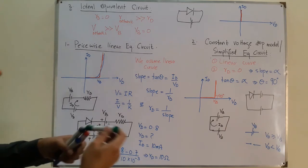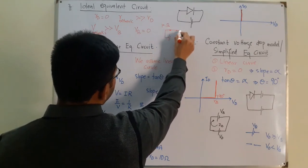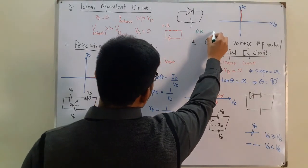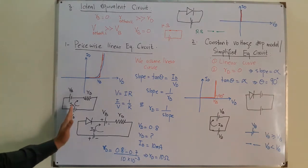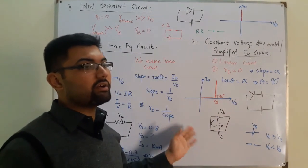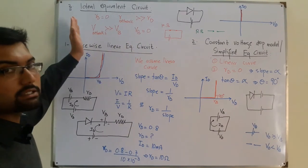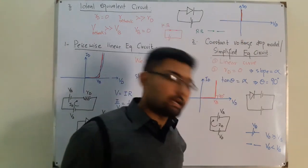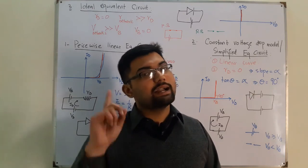To summarize: the piecewise linear model assumes a linear curve with barrier potential VB and resistance RD. The simplified model additionally assumes RD = 0, giving a vertical curve with just VB. The ideal model assumes both VB = 0 and RD = 0, giving only a short circuit or open circuit. That's all about equivalent circuits — see you in the next lecture.